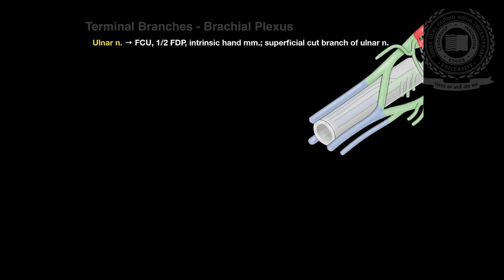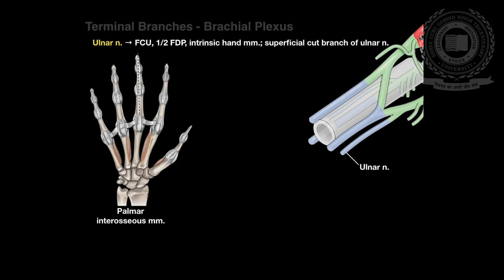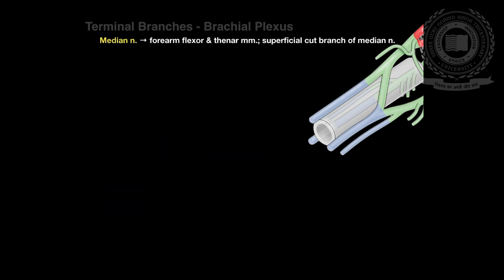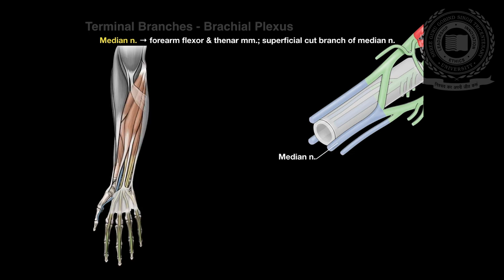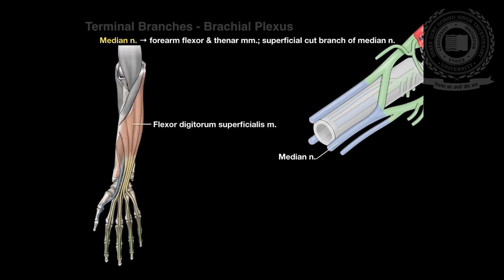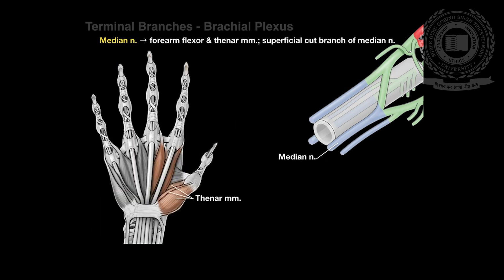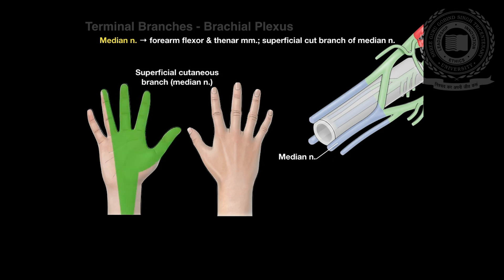The ulnar nerve is derived from the medial cord. Motor innervation is mainly to the intrinsic muscles of the hand, and sensory innervation is to the medial one and a half digits — that is, the little finger and half of the ring finger. The median nerve is derived from the lateral and medial cords. Motor innervation is to most flexor muscles in the forearm and the intrinsic muscles of the thumb (the thenar muscles). Sensory innervation is to the lateral three and a half digits, which include the thumb, index, middle, and half of the ring finger.